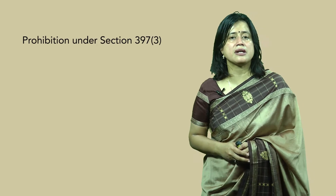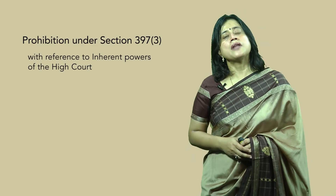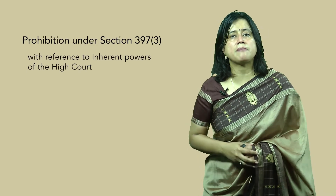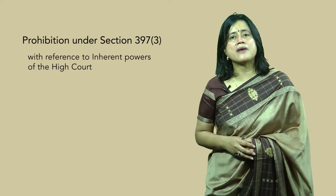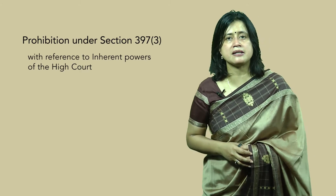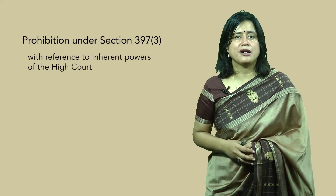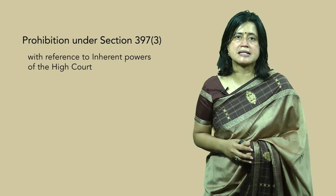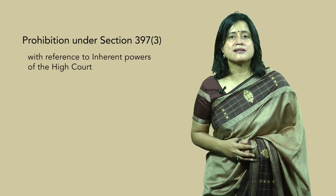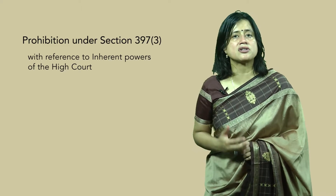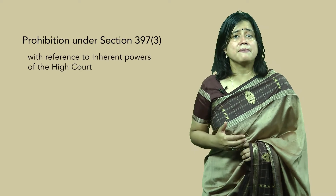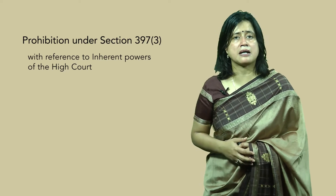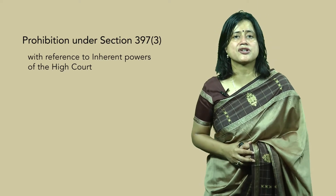The next part under the limitations of revision powers is the prohibition under Section 397(3) with reference to inherent powers of the High Court. Though this module does not deal with inherent powers, Section 482 CRPC empowers the High Court with powers not expressly present in the CRPC, which are needed to correct any miscarriage of justice. If it is beneficial in the interest of justice, the High Court exercises inherent power under Section 482 CRPC.